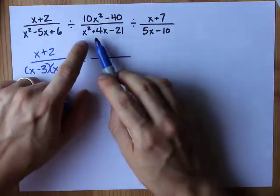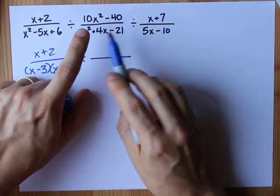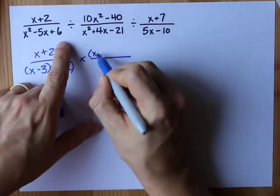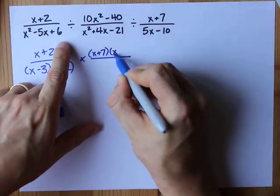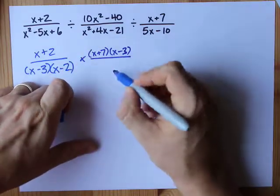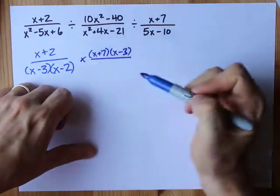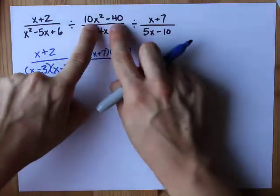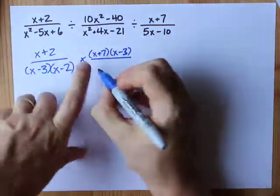The factored form of the bottom here two numbers that multiply to negative 21 and add to four is x plus seven and x minus three. I've written now on the top of this fraction because I've converted dividing to times a little advanced move there. I did two things at once. Can you factor the top here? It will get written on bottom.